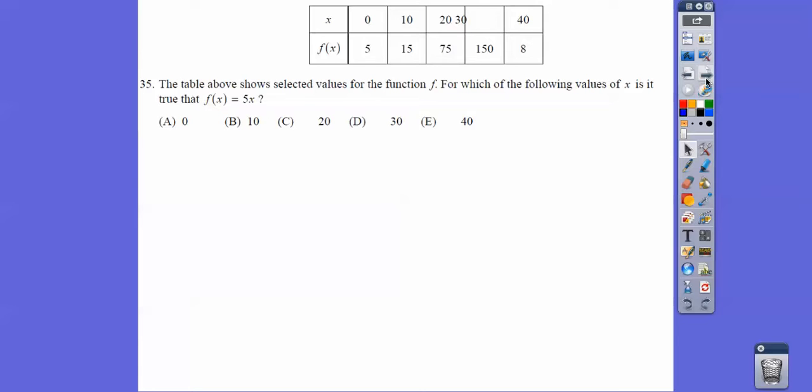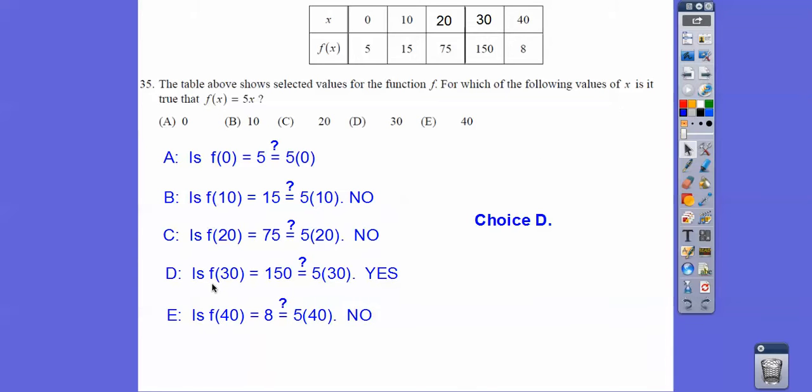The table above shows the selected values for the function F. For which of the following values X is it true that F of X equals 5X? Is F of zero equal to five times zero? Is F of 10 equal to five times 10? F of 20 equal to five times 20? I just showed you all of those. The only one that works is D. F of 30 does equal five times 30, which is 150. This is the only one where it goes at five times this number equals this number right here.